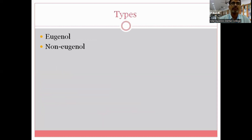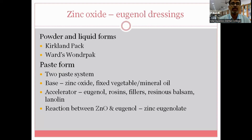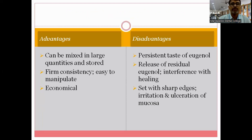Periodontal dressings can be broadly classified into eugenol-containing dressings and non-eugenol dressings. Eugenol-containing dressings are conventionally zinc oxide eugenol dressings, available either as a powder and liquid or in a base form. The prototype powder and liquid forms were the Kirkland pack and Ward's Wonder Pack, which are no longer available. In the base form, you have a two-paste system: a base paste containing zinc oxide, fixed vegetable or mineral oil, and an accelerator paste containing eugenol, rosins, fillers, resinous balsam, and lanolin. The setting reaction is between zinc oxide and eugenol, leading to the formation of zinc eugenolate.